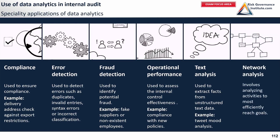Network analysis involves analyzing activities to most efficiently reach goals. In fact, the critical path method we saw in the preceding section is a kind of network analysis, and would allow you to use data analytics to most efficiently reach your goals. I won't go into the details here — just check the other section for that.